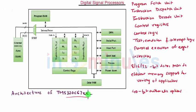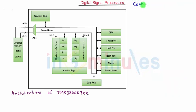Now let us see each block one by one. First we see the central processing unit. The CPU contains the program fetch unit, instruction dispatch unit and instruction decode unit.